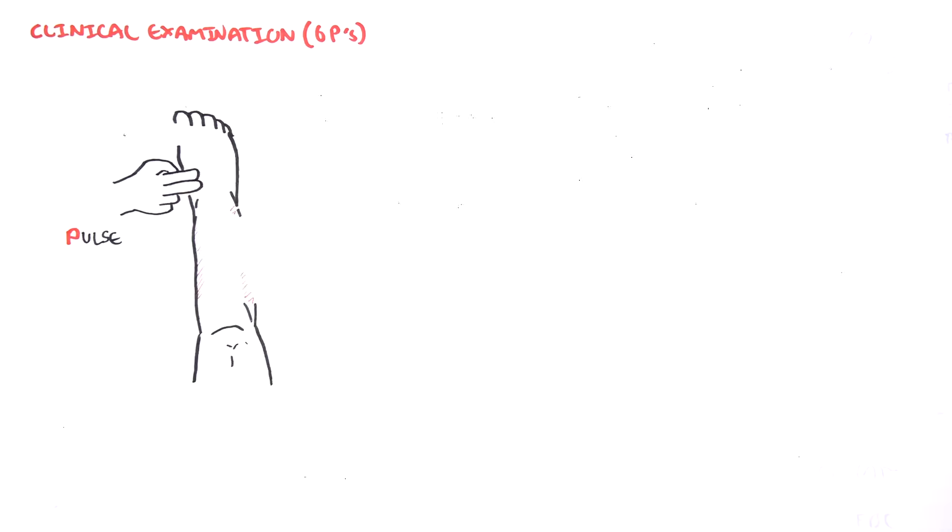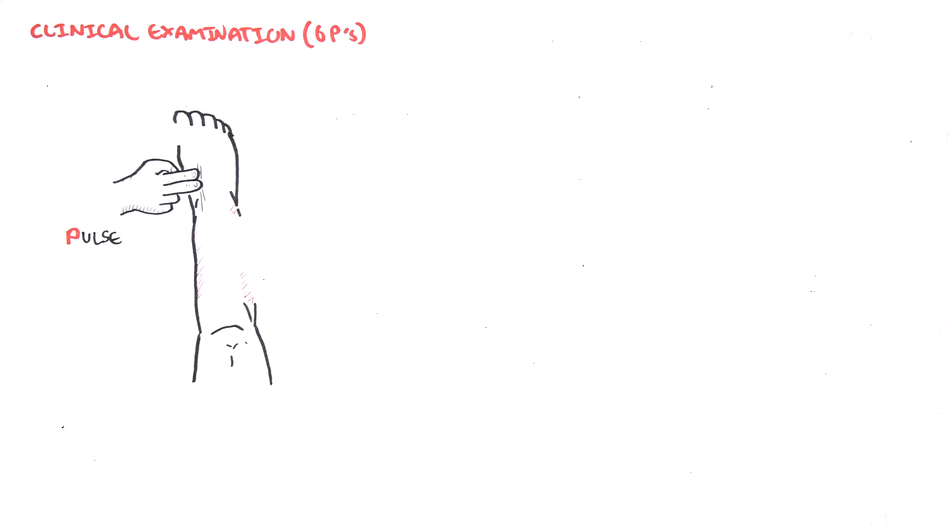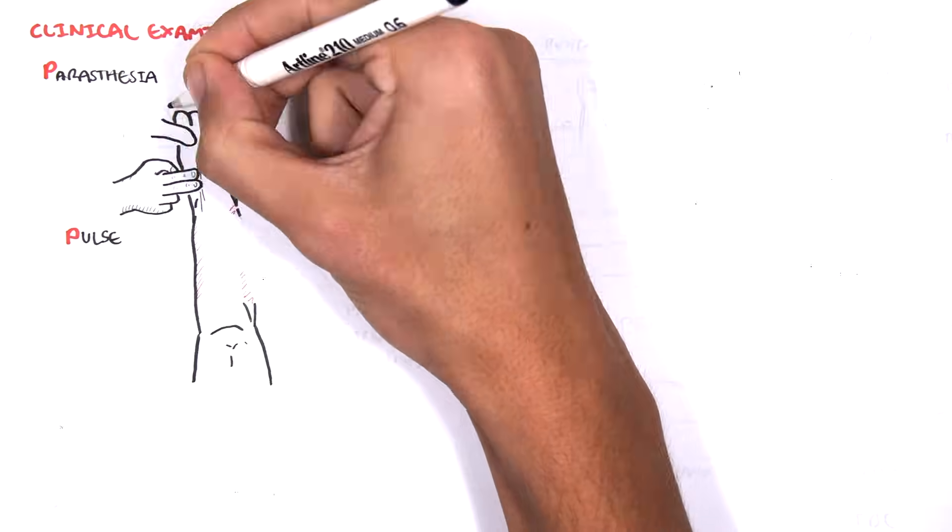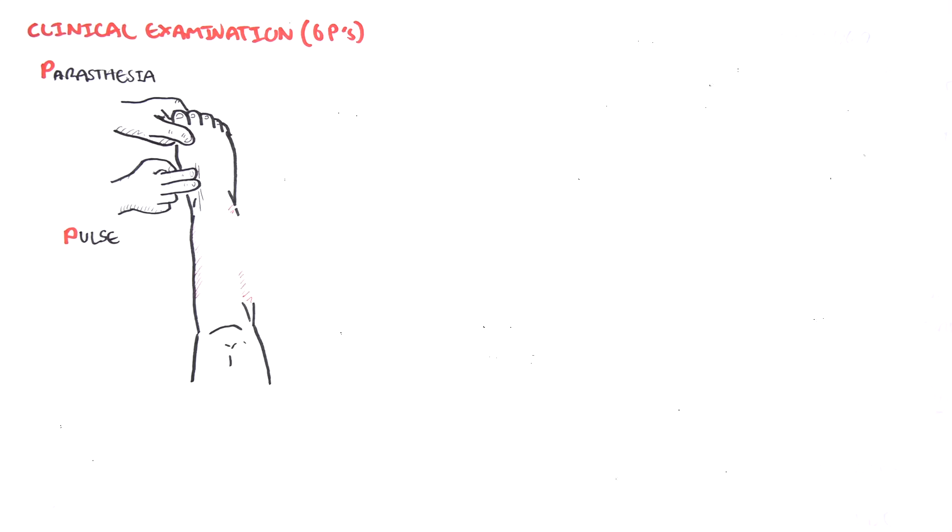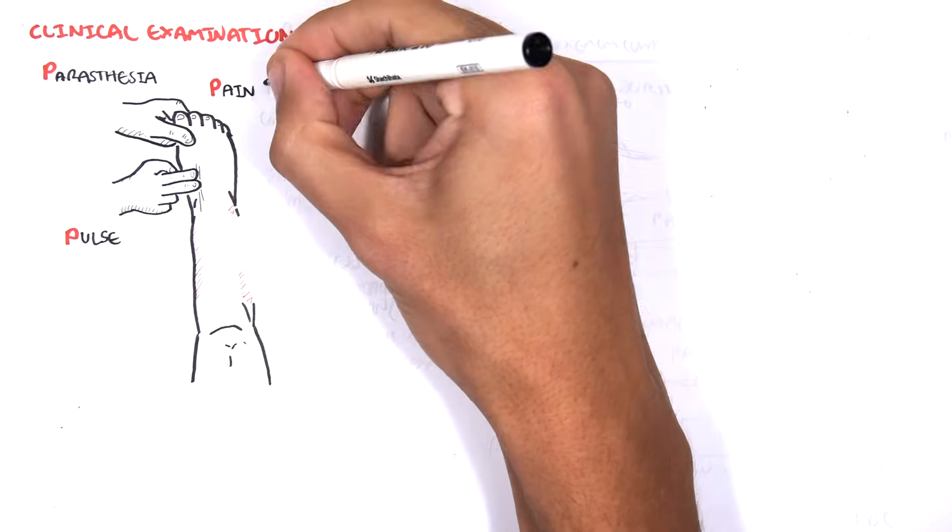The six P's include pulse. Pulse can be present even with acute compartment syndrome. Paresthesia is common. Pain is probably the most important initial finding.